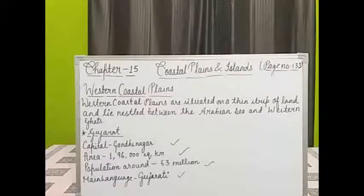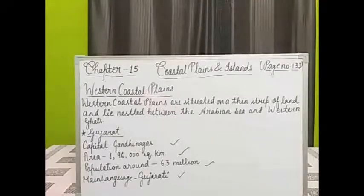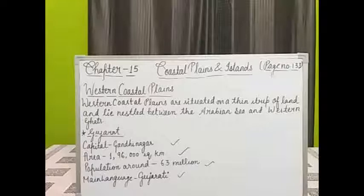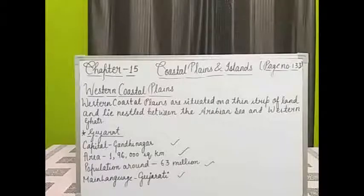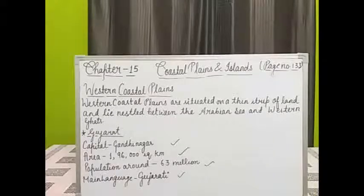Navratri is the main festival, celebrated with great enthusiasm in the state. Trading and farming are the main occupations of the people of Gujarat. Jowar, Bajra, Groundnut, Sugarcane, Cotton, and Tobacco are the main crops grown in the state.